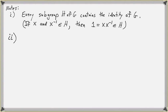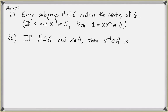Second note: if H is a subgroup of G and x is an element of H, then the inverse of x is also in H. But this is the same inverse as the inverse of x in G, so the notation is not confusing — the inverses are still the same in a subset of G.